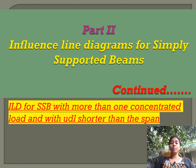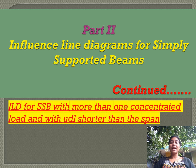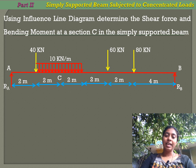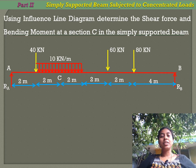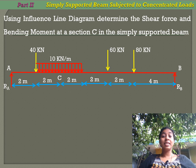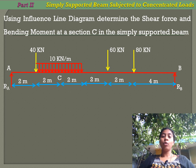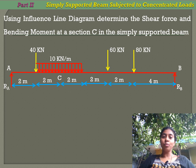We are going to find the influence line diagram for a simply supported beam with more than one concentrated load. In this problem we have three concentrated loads and one uniformly distributed load shorter than the span. Using the influence line diagram, we will determine the shear force and bending moment at section C. The total span length is 14 meters, with a 40 kilo newton load acting at a distance of 2 meters from A.